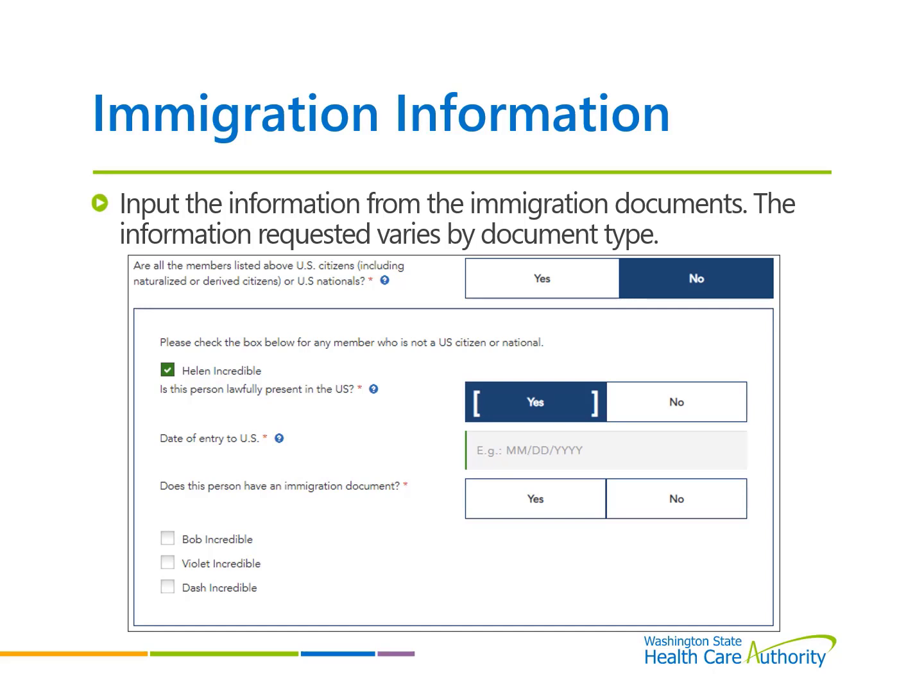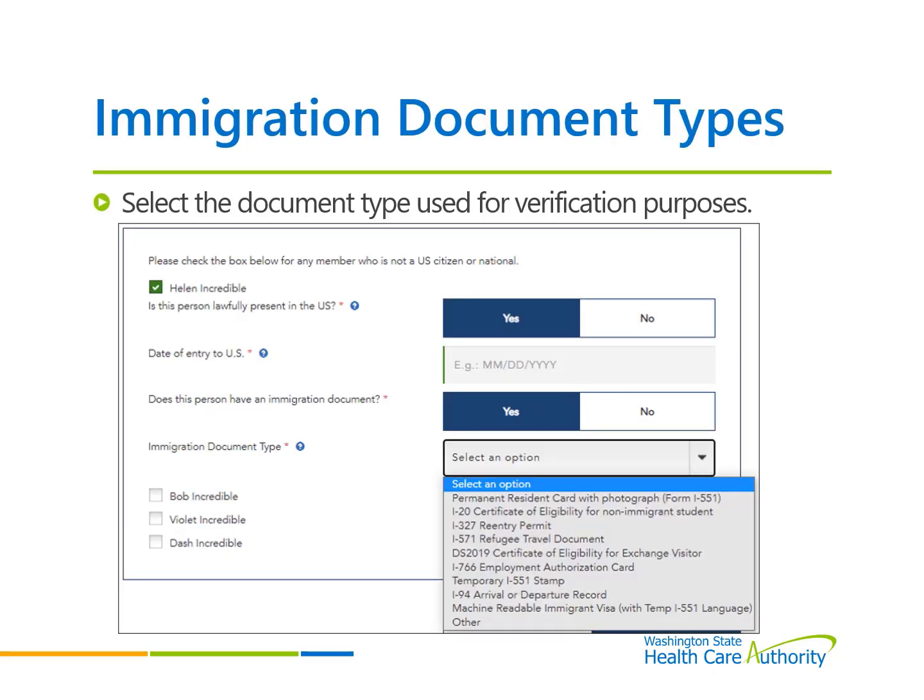Only those clients seeking coverage that are not a U.S. citizen or national will need to enter the information from their immigration documents. The information requested from the immigration documents varies by document type. However, the date of entry to the U.S. is always required. The required information for each document type will be shown in detail over the next few slides. Select the immigrant document type being used for verification. Remember, this information is only requested for those household members that are seeking coverage.